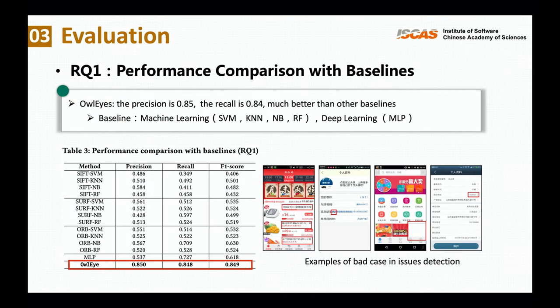For the first question, we present the issue detection performance of our proposed All-Eyes. The precision is 85%, indicating that 85% of screenshots predicted as having UI display issues are truly buggy. The recall is 84%, indicating that 84% of buggy screenshots can be found with All-Eyes. The table shows the performance comparison with baselines, and our proposed approach is much better — for example, 70% higher in recall compared with the best baseline, MLP.